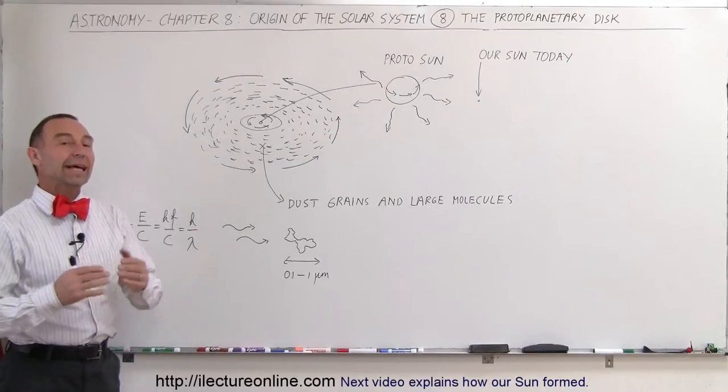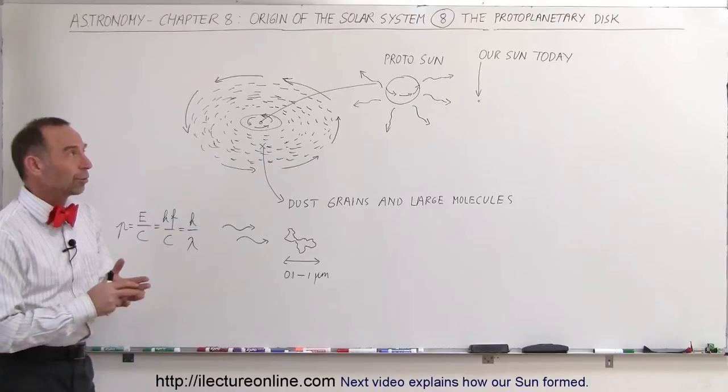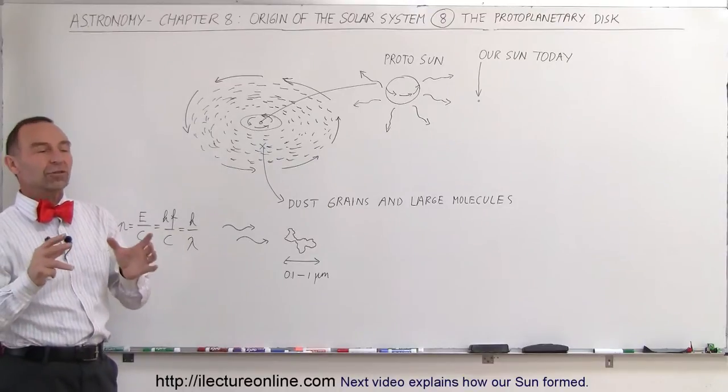Welcome to Electron Line. The next stage in the evolution and formation of our solar system was what we call the protoplanetary disk.